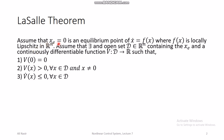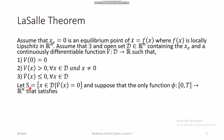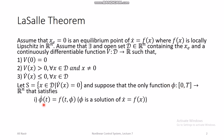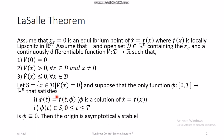Up to this point the LaSalle theorem looks exactly the same as the Lyapunov stability theorem. Lyapunov also says that under the same conditions you need to find a Lyapunov function such that three properties are satisfied, then the system is stable in the sense of Lyapunov. But LaSalle has added something new: the fourth condition is that let S be the set in neighborhood D such that for all points in S, V̇ = 0, and suppose the only function φ satisfying φ̇ = f(t, φ) and φ ∈ S is φ = 0.